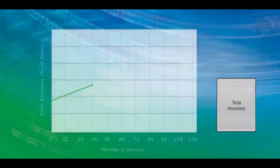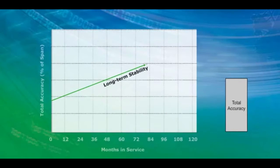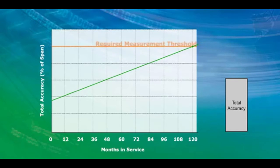The device output will drift over time depending on its stability. Calibration frequency is calculated at the point in time when the transmitter's performance reaches the required measurement threshold.